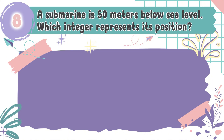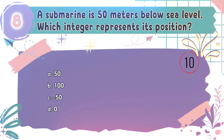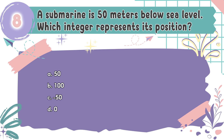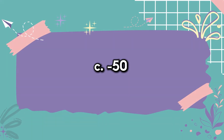Question number 8: A submarine is 50 meters below sea level — which integer represents its position? The choices are A. 50, B. 100, C. Negative 50, D. Zero. The correct answer is C. Negative 50. Below sea level is represented by a negative number.